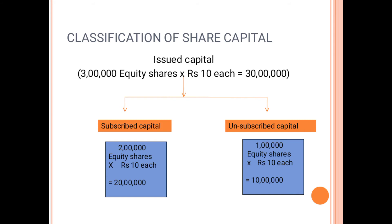Unsubscribed capital is the difference between issued capital and subscribed capital. Here, issued capital is 30 lakh and subscribed capital is 20 lakh, so the unsubscribed capital is 10 lakh. This means the company was ready to issue 3 lakh shares, but the public subscribed only 2 lakh shares. The remaining 1 lakh shares not subscribed will be added back to the unissued capital.